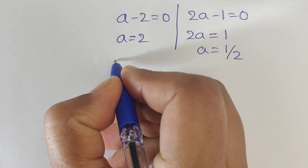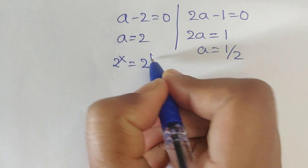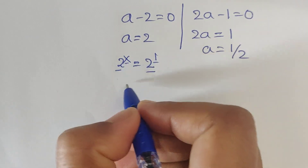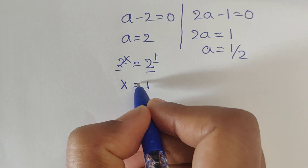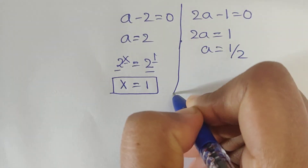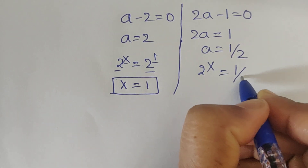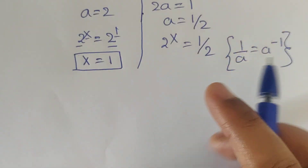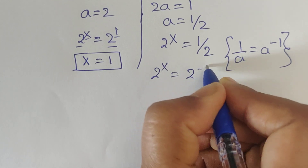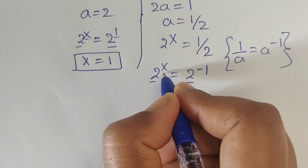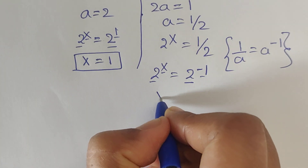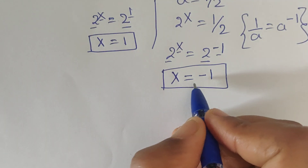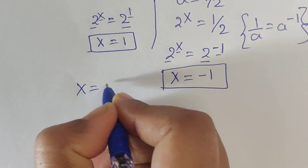We already considered a = 2^x. For a equals 2: 2^x equals 2^1, so x equals 1. For a equals 1/2: we can write 1/2 as 2 to the power minus 1, so 2^x equals 2^(minus 1), comparing exponents gives x equals minus 1. So we get x equals 1 and x equals minus 1.